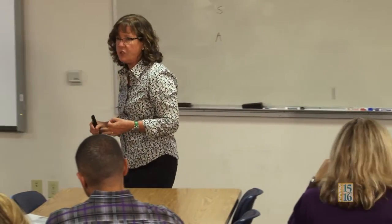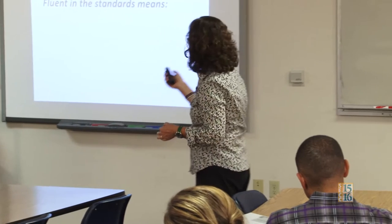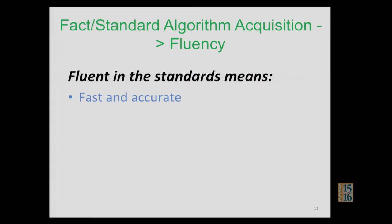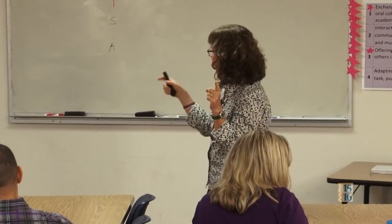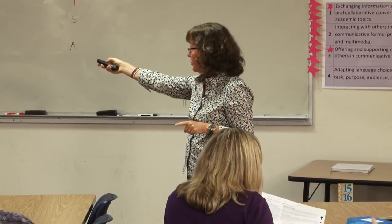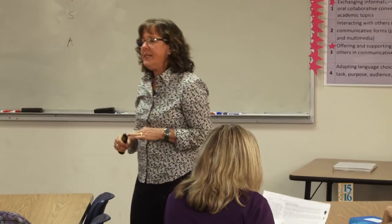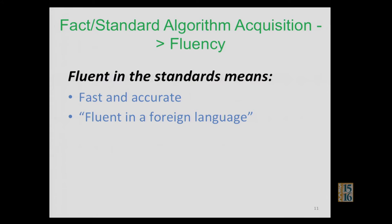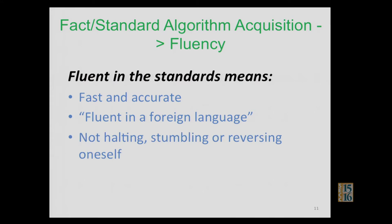One of the things in your grade level chapter you can talk about — because this is an intervention issue — is this idea of fluency. Fluency has a completely different definition than we're used to. It means that you're fast and accurate, but nowhere in this document does it say you can do a hundred facts in a minute. Nowhere. It's sort of like being fluent in a foreign language — you're not halting, stumbling, or reversing yourself.